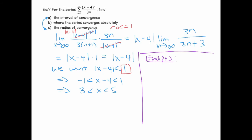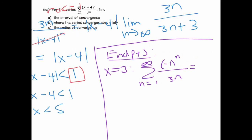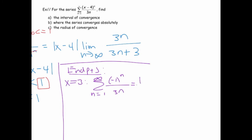Let's first check x equals 3. When you plug in x equal to 3, you get 3 minus 4, which is negative 1 to the n, over 3n. You can express this as 1/3 times the sum of negative 1 to the n as n goes from 1 to infinity. This series does not converge absolutely, but we've seen it before — it converges conditionally. So that will be included in the interval of convergence.